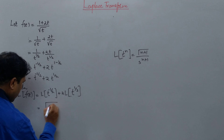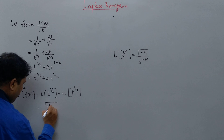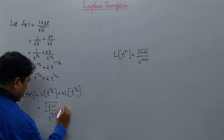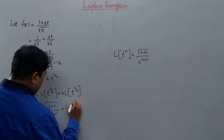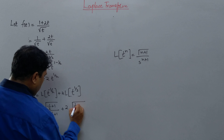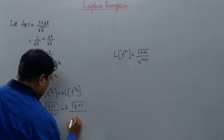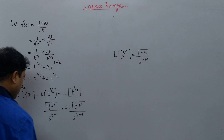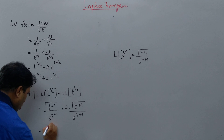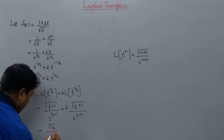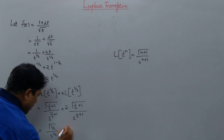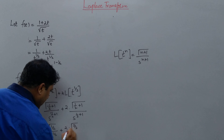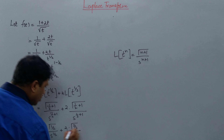Substituting, this will be Γ(-1/2 + 1) / s^(-1/2 + 1) plus twice Γ(1/2 + 1) / s^(1/2 + 1). Simplifying the exponents, this becomes Γ(1/2) / s^(1/2) plus twice Γ(3/2) / s^(3/2).